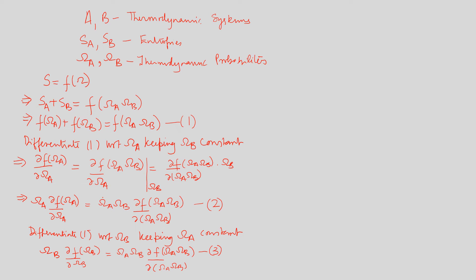Comparing equation two and three, we see that the right hand side of both these equations is identical, which means that the left hand sides are also equal and they should be equal to a constant. So we can rewrite this result as that omega A times del f by del omega A is equal to some constant K.